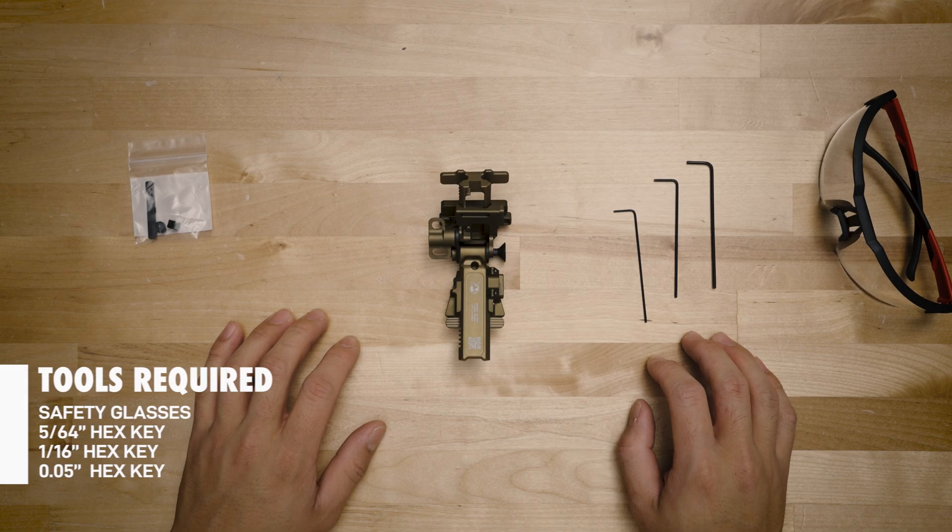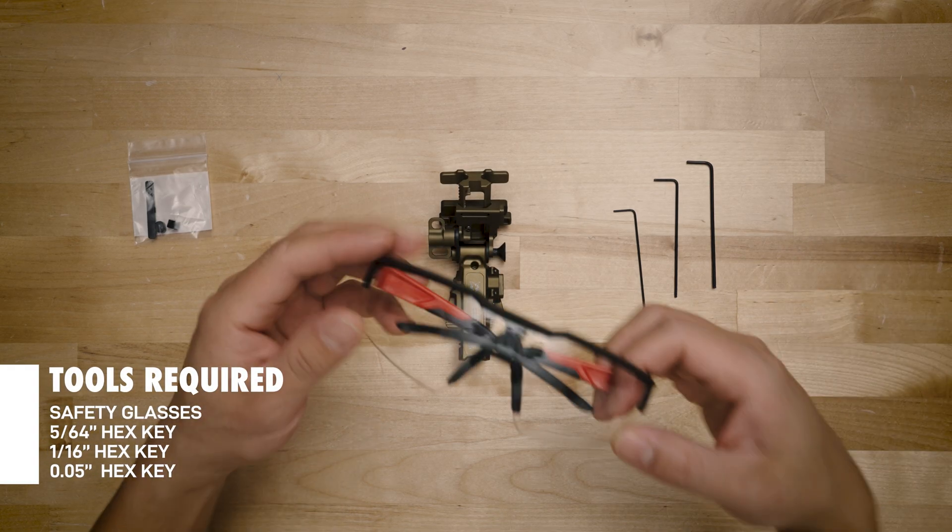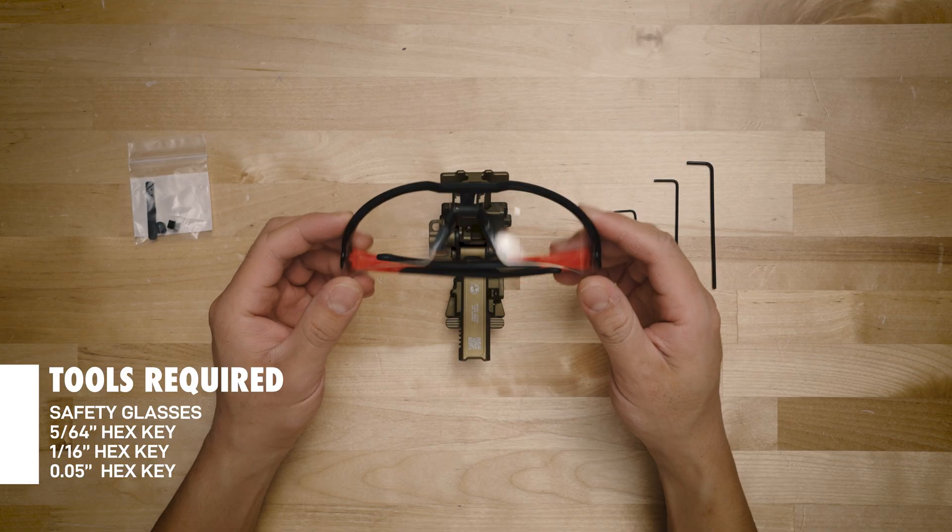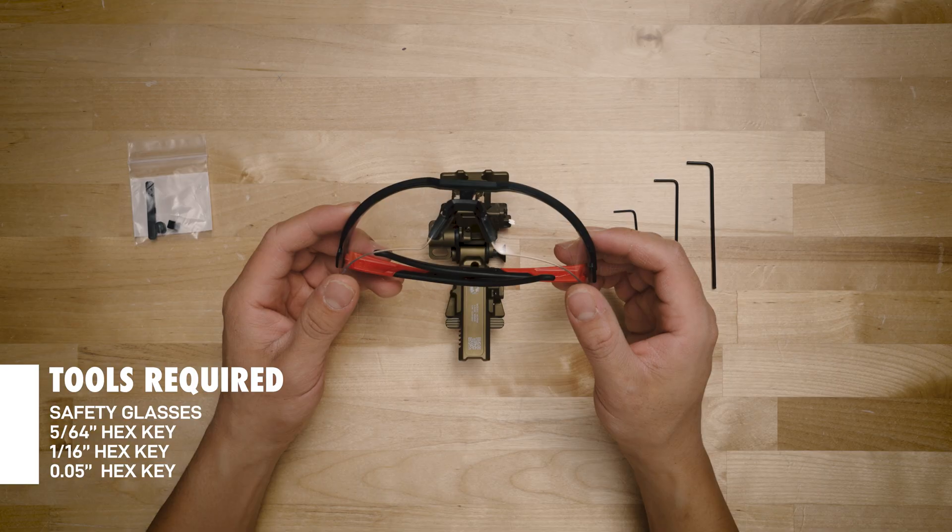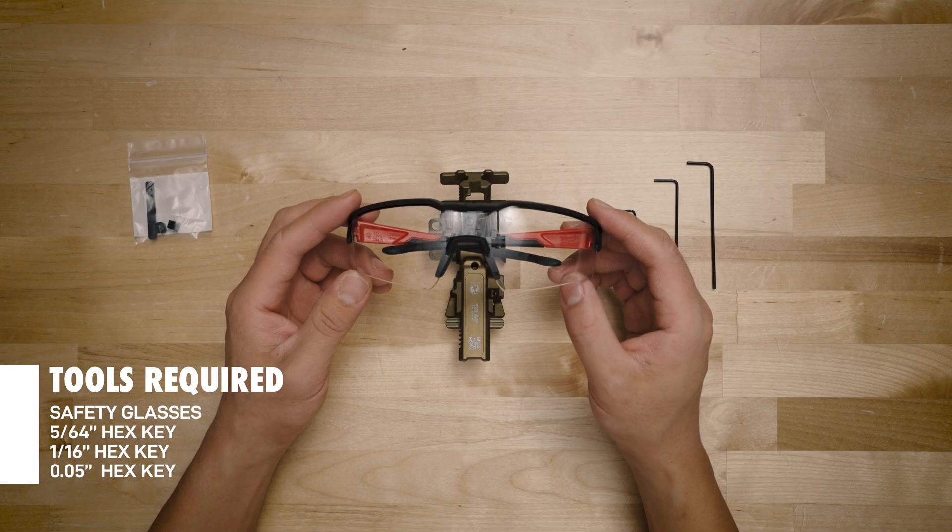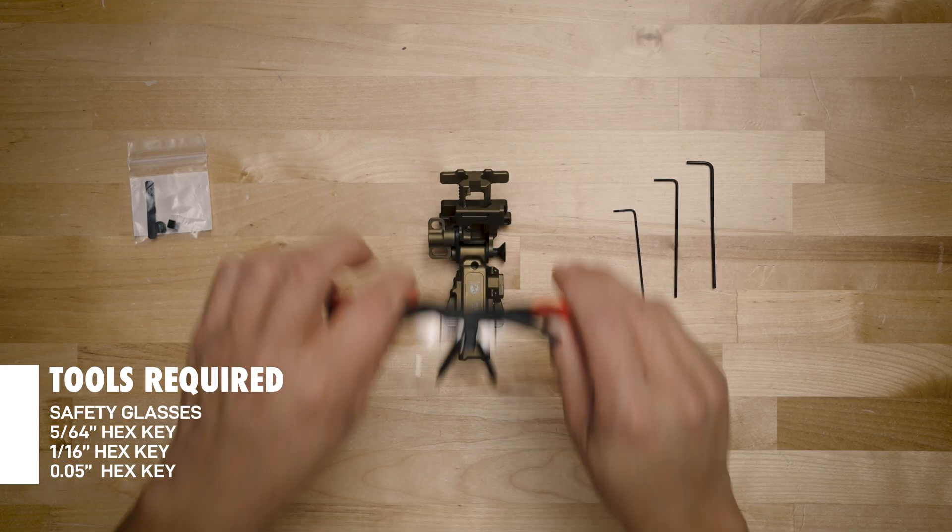So we're going to need some tools for this installation. First off, Nocturne Industries does recommend you guys use safety goggles for this installation. Because we are working with ball bearings under tension, we do want to make sure that nobody loses an eye over this. So let's put these on.